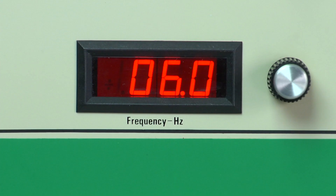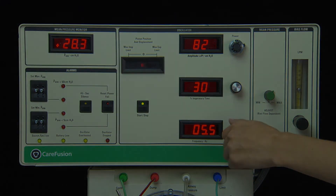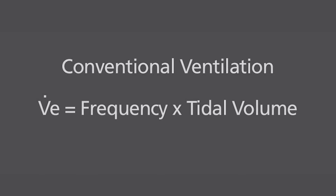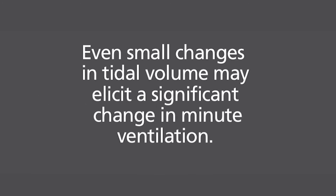The breath rate of the 3100B is expressed in hertz. One hertz is equal to 60 cycles per minute. Typical applications utilize frequencies of 4 to 6 hertz, or 180 to 360 breaths per minute. Unlike conventional ventilation, in which minute ventilation is expressed as frequency multiplied by tidal volume, minute ventilation for HFOV is expressed as frequency times tidal volume squared. It's important to understand this relationship, since even small changes in tidal volume may elicit a significant change in minute ventilation.